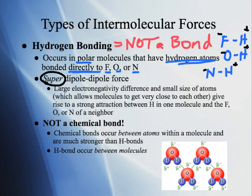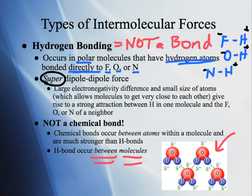The large electronegativity differences and small sizes of F, O, and N give a strong attraction between the hydrogen in one molecule and the F, O, or N in a neighbor. But again, it is not a chemical bond. Chemical bonds occur between atoms within a molecule and are much stronger than hydrogen bonds. Hydrogen bonds occur between molecules.